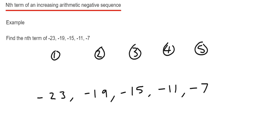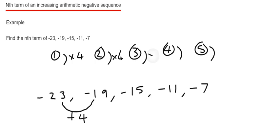If you have a look at our numbers in the sequence, you can see that the sequence is going up by 4 each time. So this tells me the nth term has something to do with the 4 times table. So what I'm going to do is multiply all the numbers at the top by 4 — in other words, write down our first 5 multiples of 4.